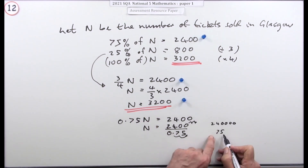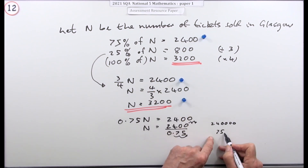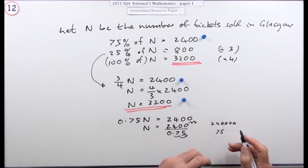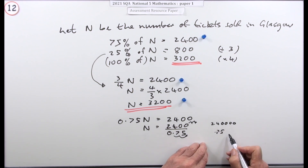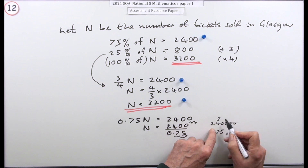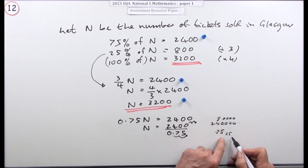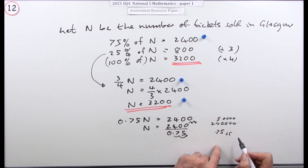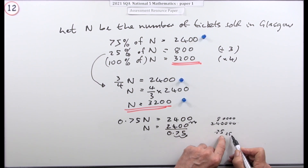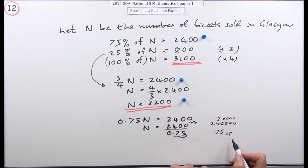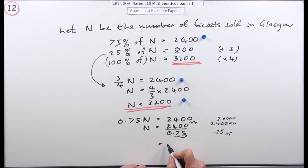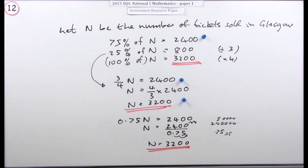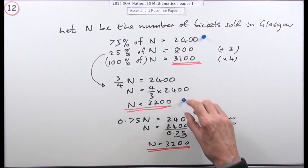Cancel by dividing both by 3: N equals 80,000 divided by 25. Since there are 4 twenty-fives in every 100, dividing by 25 means dividing by 100 and multiplying by 4. So N equals 80,000 divided by 100, times 4, which is 800 times 4 equals 3,200 — the same answer.